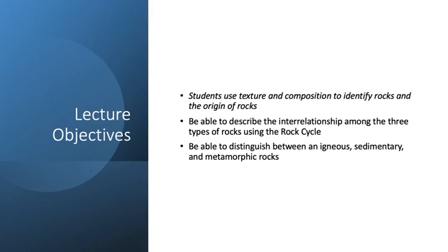Our lecture objectives and learning outcomes include students use texture and composition to identify rocks and the origin of rocks. That's one of our course student learning outcomes. We also want to be able to describe the interrelationship among the three types of rocks using the rock cycle, and be able to distinguish between an igneous, sedimentary, and metamorphic rock.